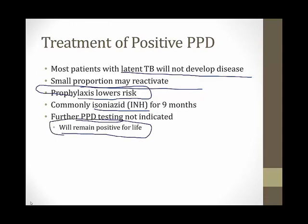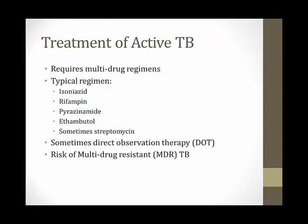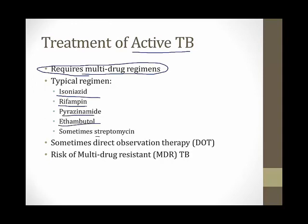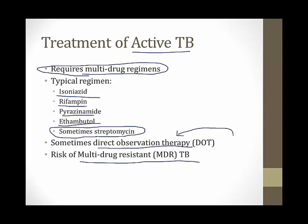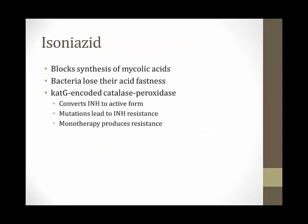Active tuberculosis is very difficult to treat with a single drug because mycobacteria have resistance to many drugs. A multi-drug regimen of three or four drugs is required. A typical regimen includes isoniazid, rifampin, pyrazinamide, ethambutol, and sometimes streptomycin. Direct observation therapy may be required as a public health measure — if patients miss doses or are non-compliant, multi-drug resistant tuberculosis can develop, threatening community health.